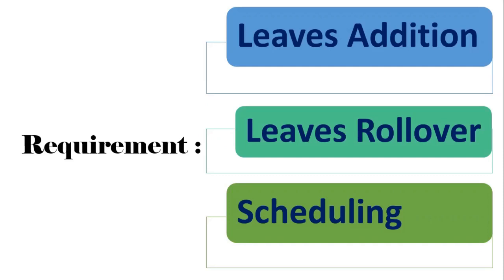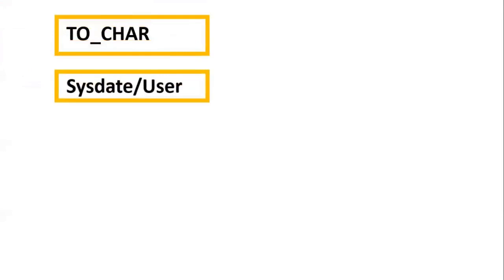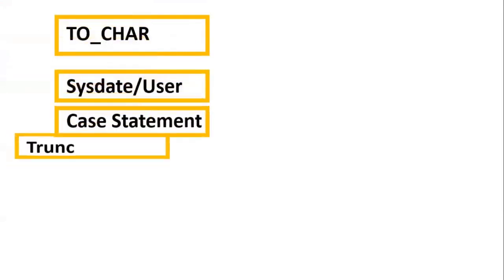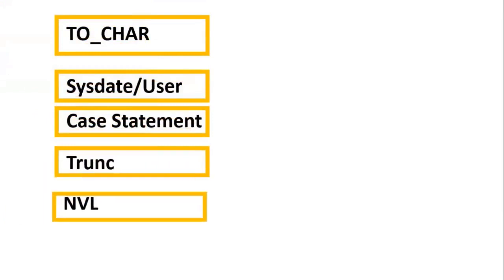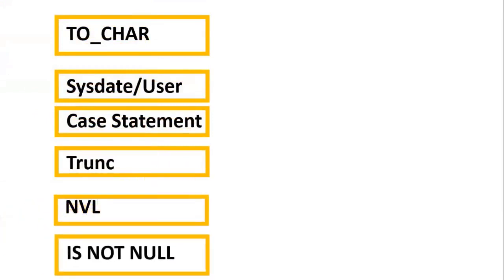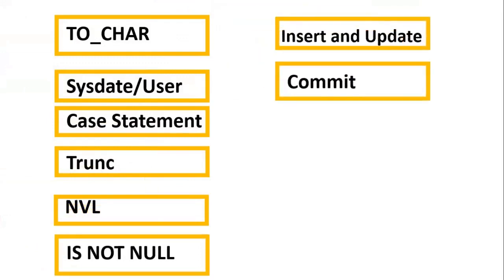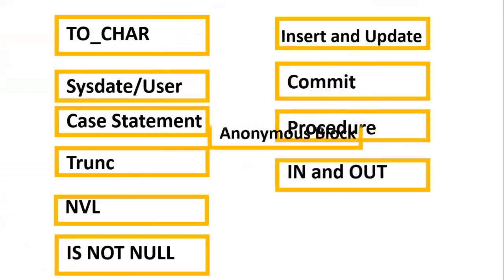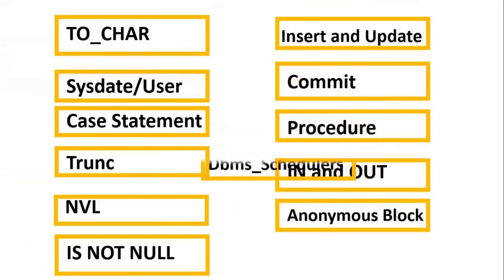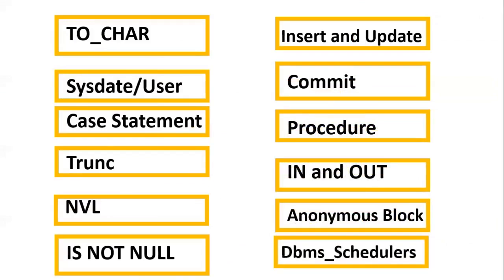To solve this requirement, you should have a better understanding of the following concepts: TO_CHAR, SYSDATE, and USER — these are pseudo columns — CASE statement, TRUNC, NVL and IS NOT NULL to handle nulls, DML statements, COMMIT as a transaction control language statement, procedures with IN and OUT parameters, anonymous block which is used to execute the procedure, and DBMS_SCHEDULER which is used to execute the procedure automatically for scheduling.